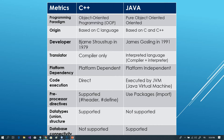Next, C++ was created by Bjarne Stroustrup. He developed C++ in 1979. Java was created by James Gosling in 1991.